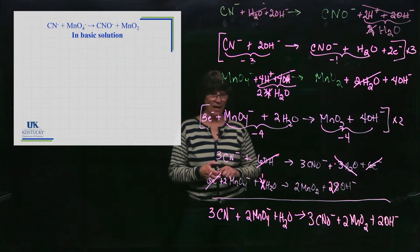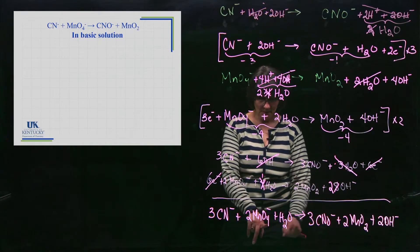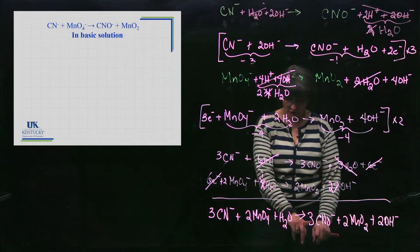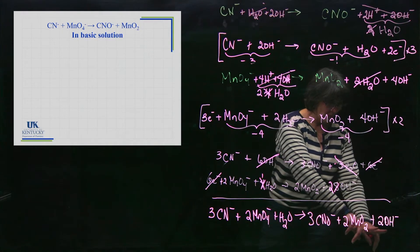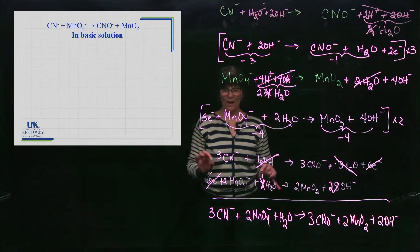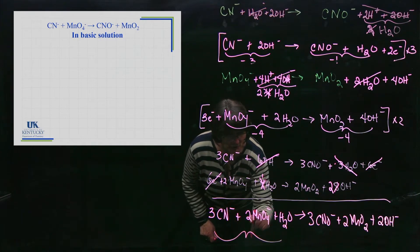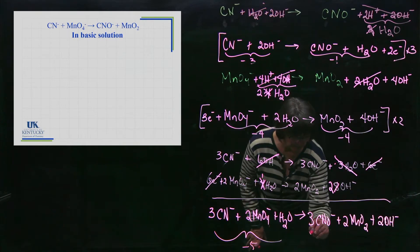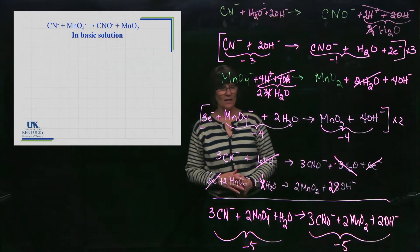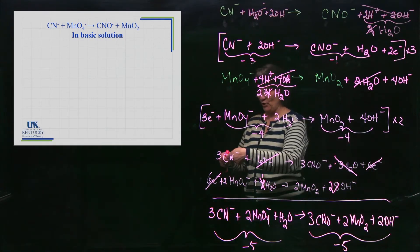Checking the balanced equation: three carbons, three nitrogens, two manganese on each side. Oxygens: four plus one equals nine on the left; three plus four plus two equals nine on the right. Two hydrogens on each side — atoms balanced. Charges: left has three minuses plus two minuses equals minus five; right has three minuses plus two minuses equals minus five. Balanced!